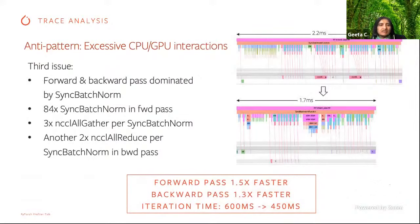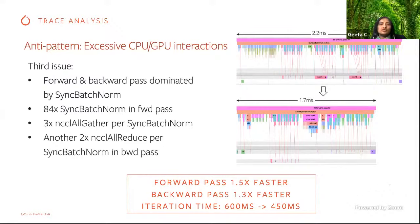A third issue from another training run was that forward and backward passes were dominated by the sync batch norm function. The model had about 84 sync batch norms in the forward pass, with a 3x overhead in the NCCL all-gather for each sync batch norm and another 2x on each NCCL all-reduce. This was optimized and we got a speedup of 1.5x in the forward pass and 1.3x in the backward pass.